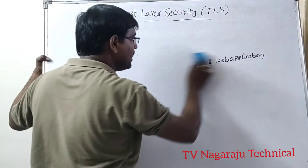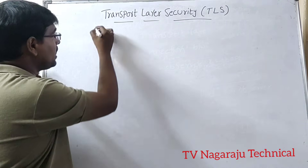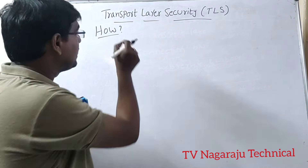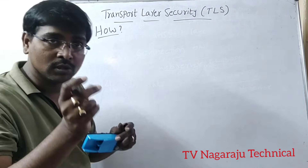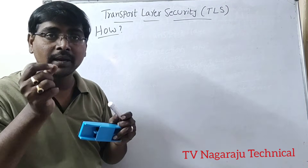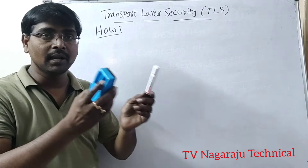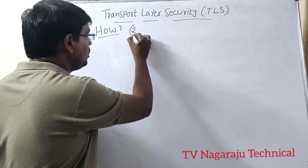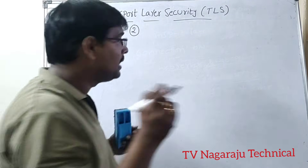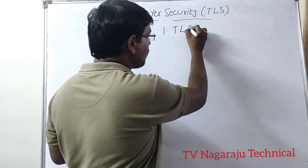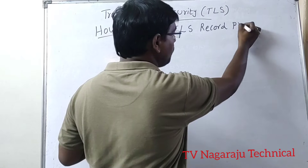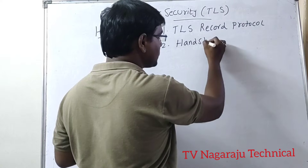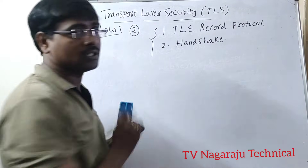How does TLS work? Transport Layer Security uses both symmetric and asymmetric encryption algorithms. TLS mainly depends on two layers: the first one is the TLS Record Protocol, and the second one is the Handshake Process.